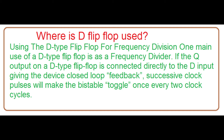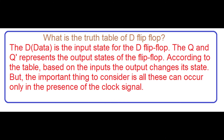Where is D flip-flop used? Using the D type flip-flop for frequency division — one main use of a D type flip-flop is as a frequency divider. If the Q output on a D type flip-flop is connected directly to the D input, giving the device closed loop feedback, successive clock pulses will make the bistable toggle once every two clock cycles.